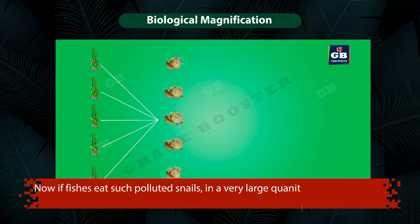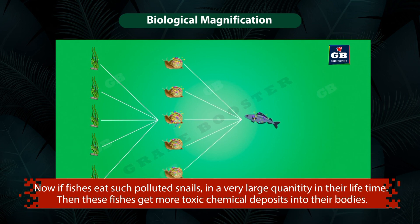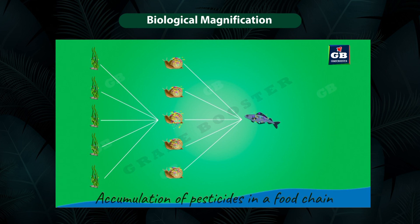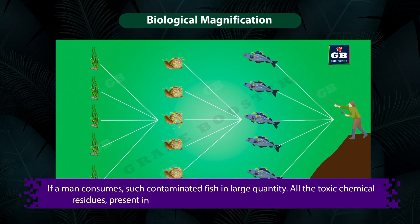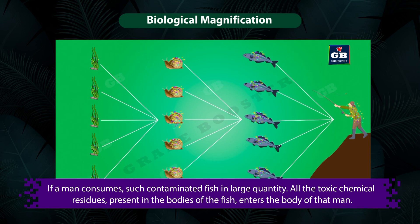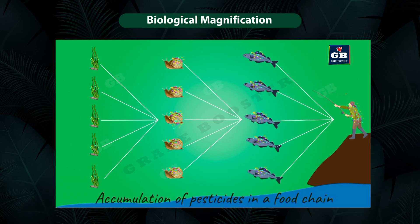Now if fish eat such polluted snails in very large quantity in their lifetime, then these fish get more toxic chemical deposits in their bodies. If we consider the next organism in this food chain is man — man usually stays at the top of the food chain — if a man consumes such contaminated fish in large quantity, all the toxic chemical residues present in the bodies of the fish enter the body of that man. In this way, large amounts of pesticide and insecticide residues get accumulated and deposited in our bodies.